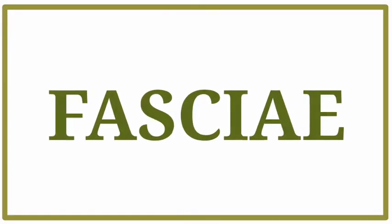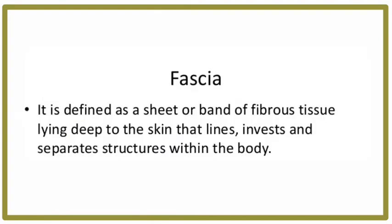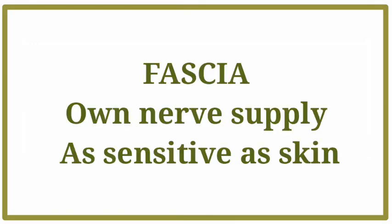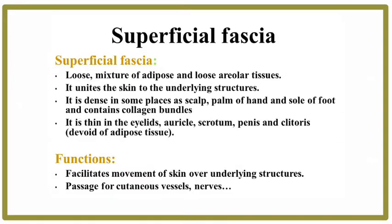Welcome back. Today our session is about fascia. Fascia is a thin connective tissue that covers muscle and other structures, holding them in place. It has its own nerve supply, which makes it almost as sensitive as skin. Fascia is divided into two types: the superficial fascia and the deep fascia.